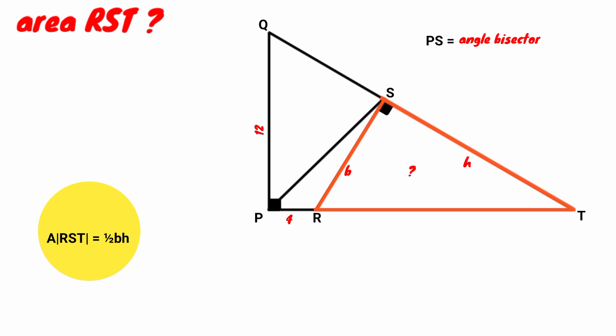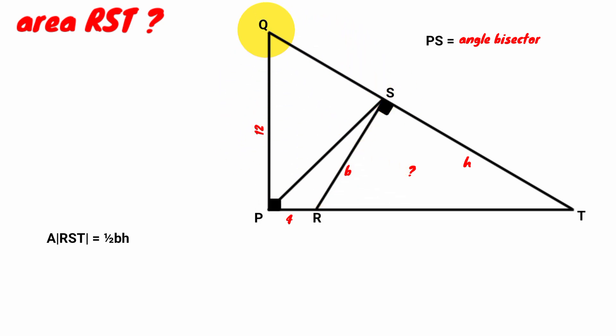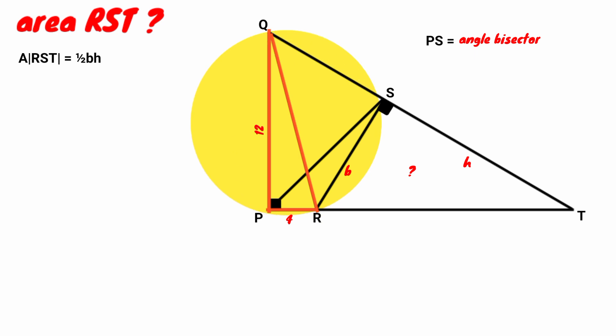So area of triangle RST equals 1/2 × B × H. But what are the values of B and H? We don't know yet. So let's draw a line segment connecting point Q and point R. Now look at triangle PQR — it is also a right angle triangle.